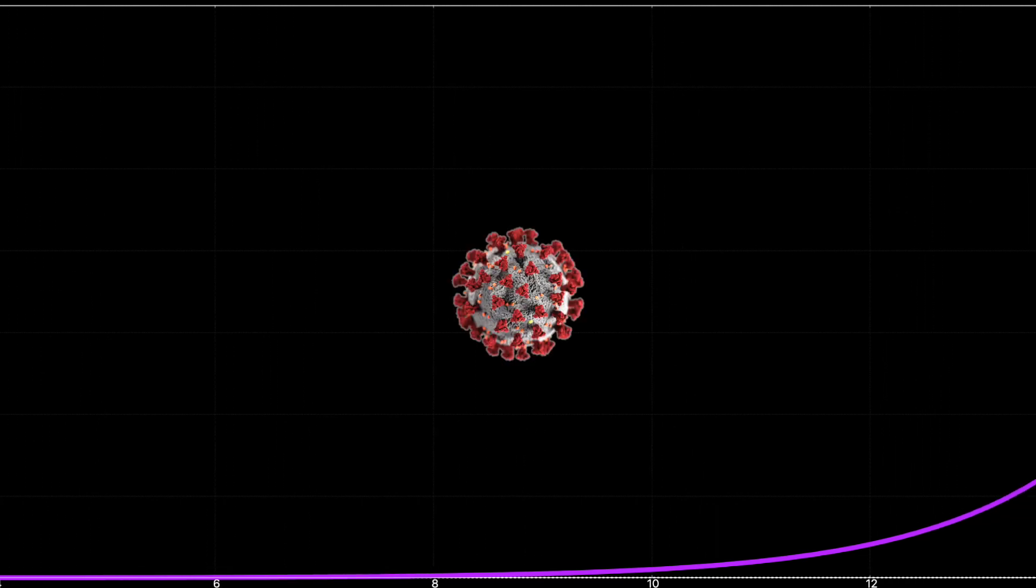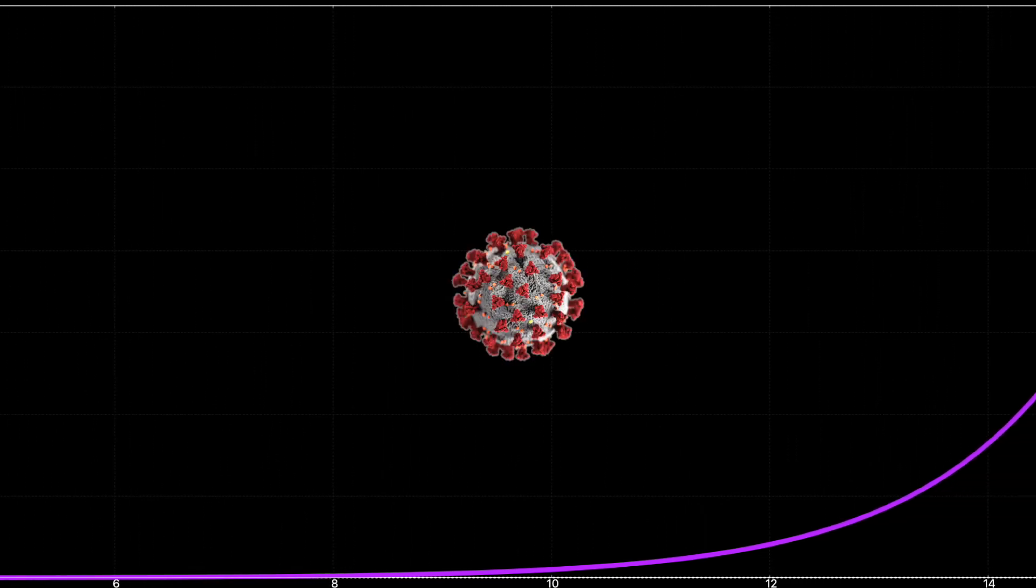And then there is population growth and the spread of infectious diseases. In the absence of inhibiting factors, the growth of a population is proportional to the current population and follows an exponential curve. This is also true of infectious agents like viruses. Now, of course, there are inhibiting factors.